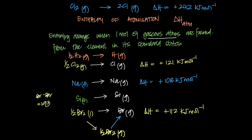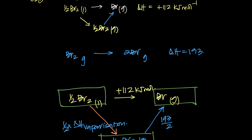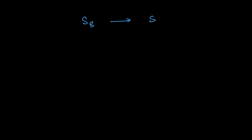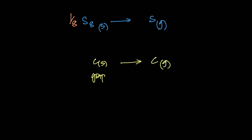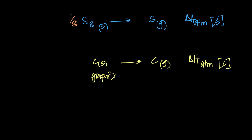Sulfur is found as S₈, so the atomization of sulfur is S₈ solid becoming S gas, but since we want one mole of S gas we need one-eighth of S₈. The atomization of carbon is C solid (graphite, its standard state) becoming C gas. It's important to be able to write the equation that represents the atomization reaction.